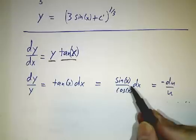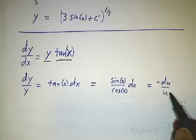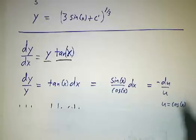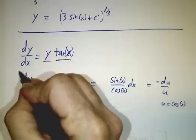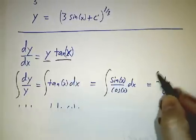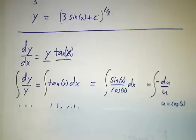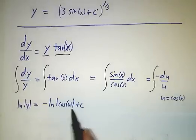And of course, tangent of x dx is sine x over cosine of x dx. And that suggests a u substitution where you let u be cosine of x. This is minus du over u. And we get the natural log of y is minus the natural log of the cosine of x plus a constant.